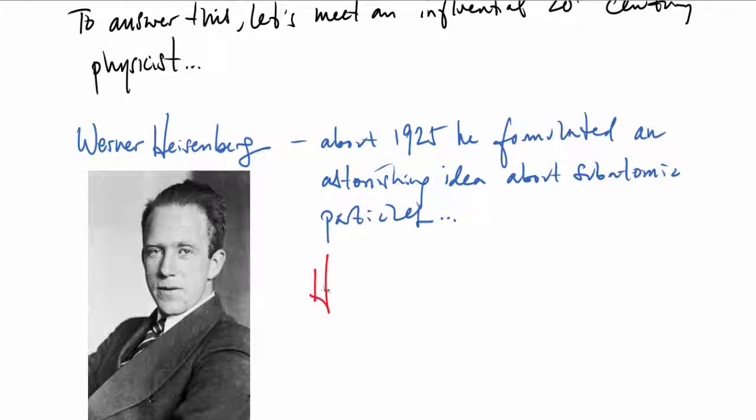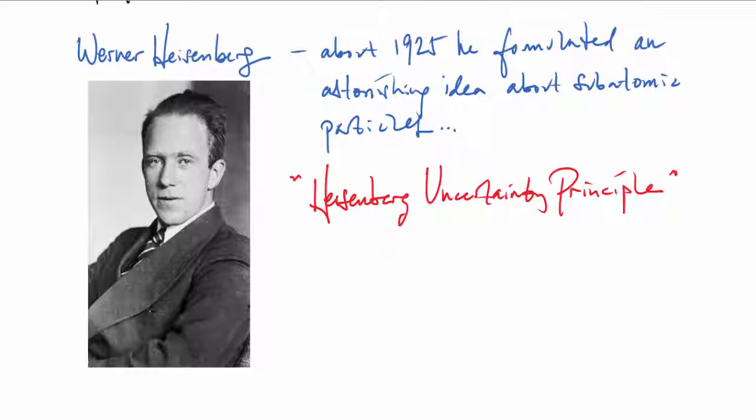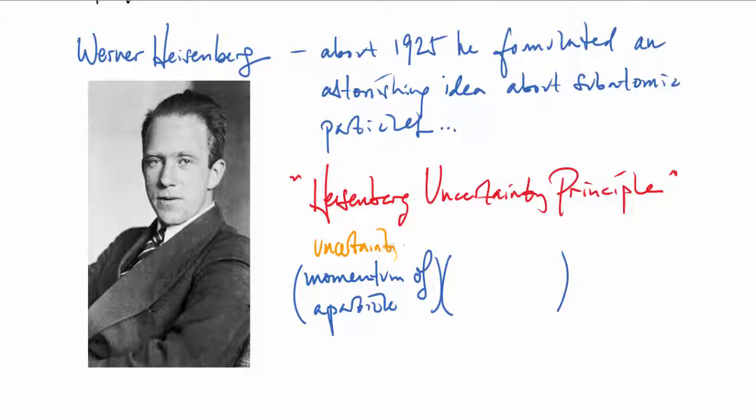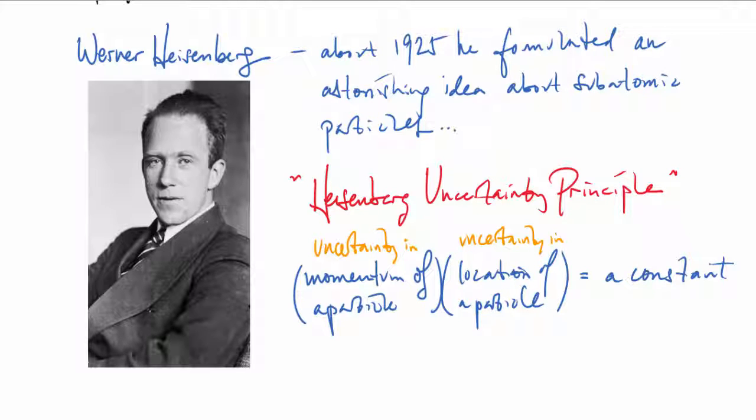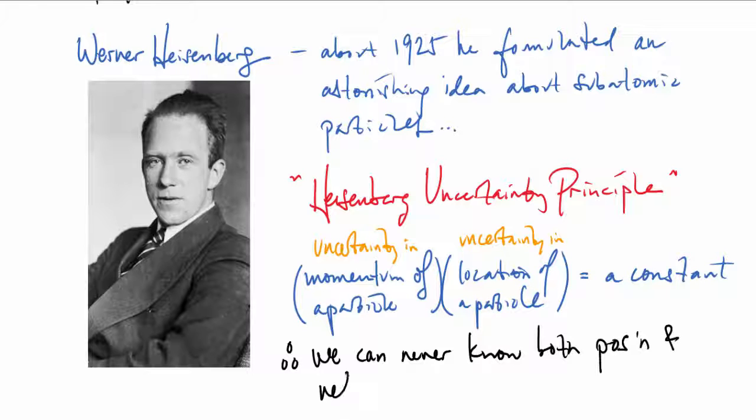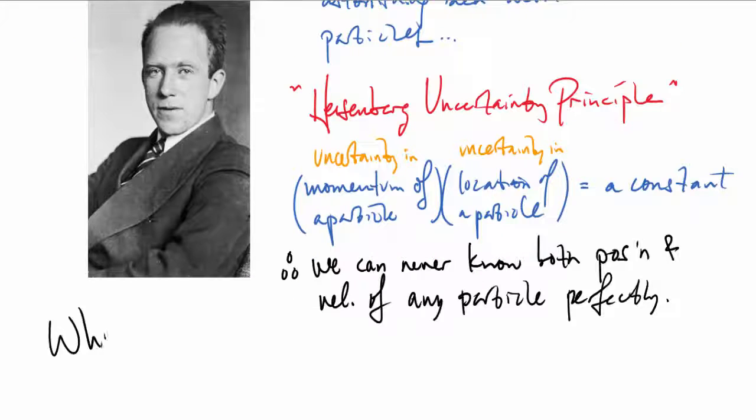His principle is really quite groundbreaking. He says that the uncertainty we have in the momentum of a particle multiplied by the uncertainty in the location of that same particle should be no less than some constant value. If you think about that, you get the astonishing conclusion that we can never know both the position and the velocity of any particle perfectly. If we know perfectly where it is, we can't know its velocity, and conversely.